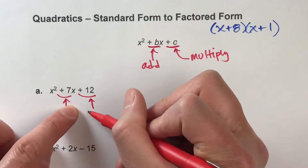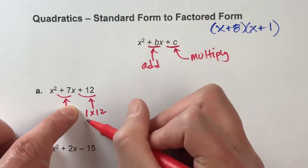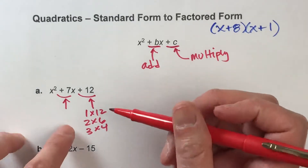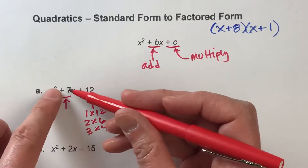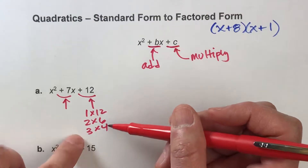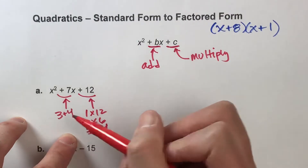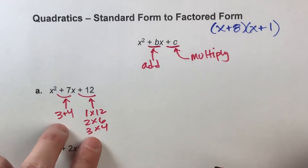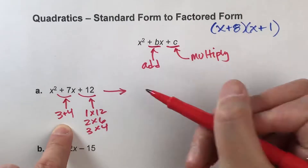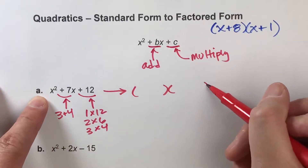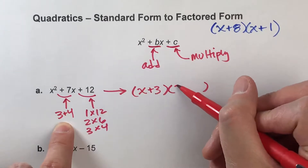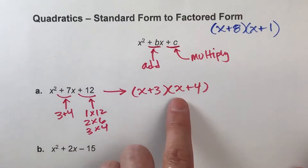Let's list out the factors of 12: 1 times 12, 2 times 6, 3 times 4. Do any of these pairs also add up to 7? 1 plus 12 is 13 — that doesn't work. 2 plus 6 is 8 — that doesn't work. 3 plus 4 is 7. We found our winners: 3 and 4. To write this into factored form, since our numbers are 3 and 4, factored form will be x plus 3 times x plus 4.